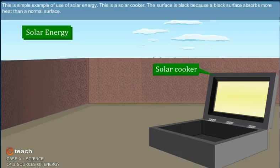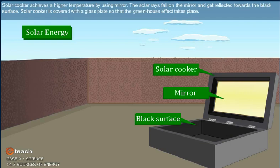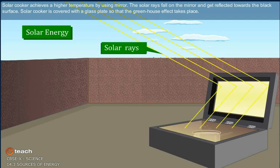This is a solar cooker. This surface is black because black surface absorbs more heat than the normal surface. Solar cooker achieves a higher temperature by using mirror. The solar rays fall on mirror and reflect it towards black surface. Solar cooker is covered with a glass plate so that the greenhouse effect takes place.